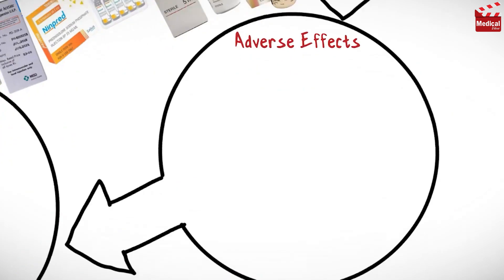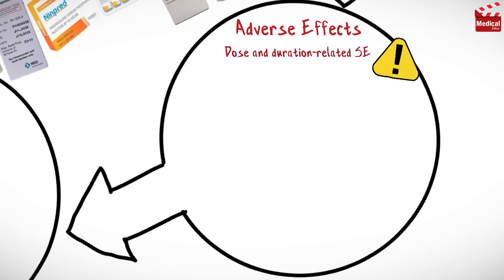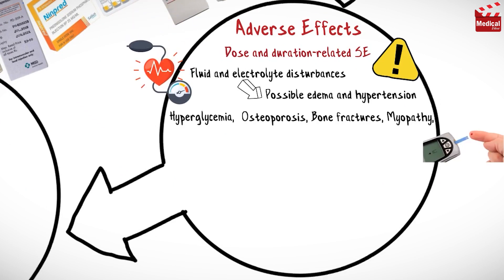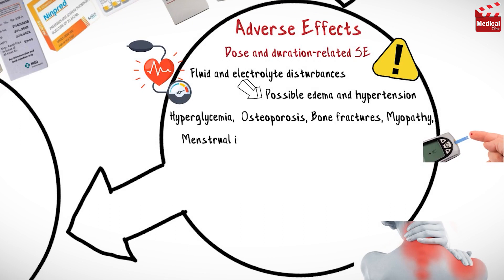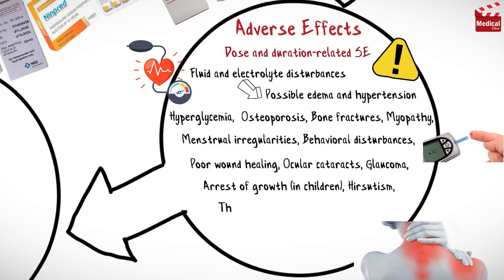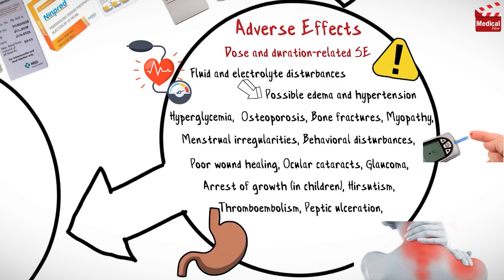Duration-related side effects of prednisolone include fluid and electrolyte disturbances with possible edema and hypertension, hyperglycemia, osteoporosis, bone fractures, myopathy, menstrual irregularities, behavioral disturbances, poor wound healing, ocular cataracts, glaucoma, arrest of growth in children, hirsutism, thromboembolism, peptic ulceration, and Cushing-like syndrome.